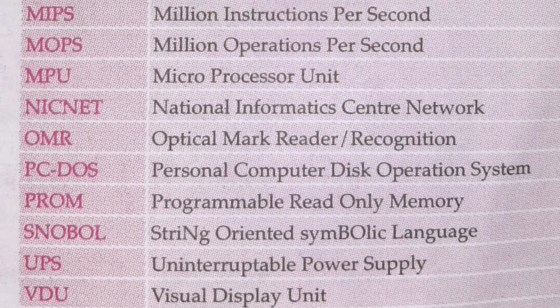The next one is PC DOS — Personal Computer Disk Operating System. After that is PROM — Programmable Read Only Memory. This is a form of digital memory where the contents can be changed once after manufacture of the device; the data is then permanent and cannot be changed.